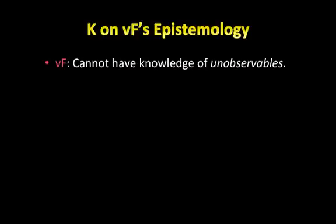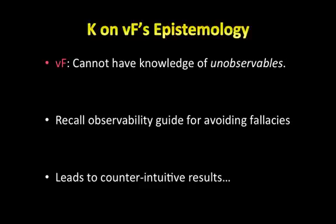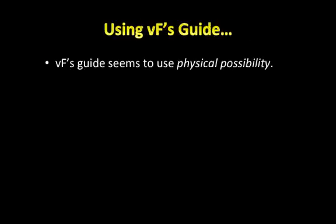Kitcher's overall criticism of van Fraassen is really about van Fraassen's epistemology. Kitcher tells us that according to van Fraassen, we cannot have knowledge of unobservables. Recall van Fraassen's observability guide for avoiding fallacies. Van Fraassen says: if there are circumstances under which, if x were present to us, we could observe it. However, according to Kitcher, this guide for avoiding fallacies actually leads to very counterintuitive results.